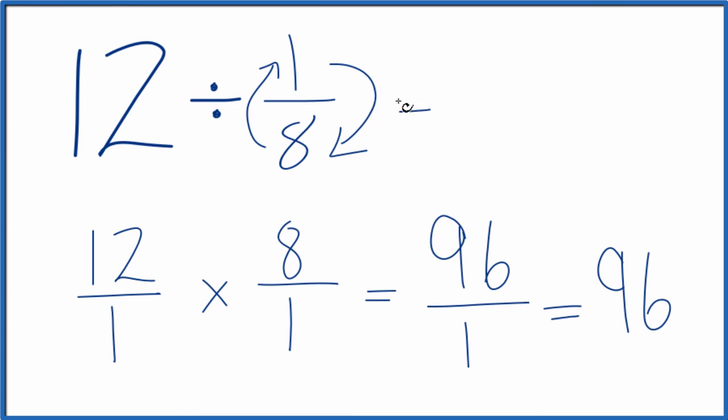So in answer to our question, 12 divided by 1 8, that's 96. If you were to take 96 and you multiplied that by 1 8, you'd get 12. So we did this correctly.